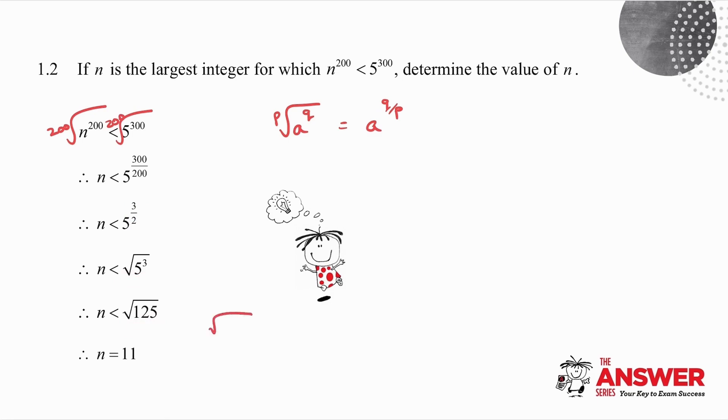You know that the square root of 121 is 11, and the square root of 144 is 12. So if I want n to be less than root 125, the biggest one that is less than that is root 121. Because they asked me for the largest integer. In other words, n must equal 11.